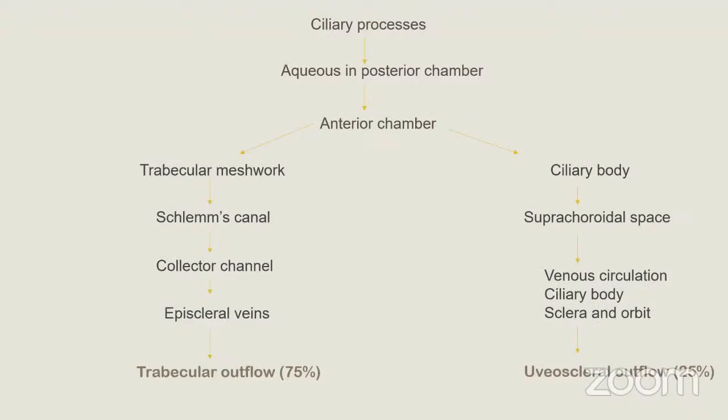Briefly reviewing the outflow pathway: aqueous produced by the ciliary processes goes into the posterior chamber and through the pupil enters the anterior chamber. Exit occurs via two major pathways — trabecular outflow and uveoscleral outflow. In trabecular outflow, aqueous goes from the anterior chamber into the trabecular meshwork, through Schlemm's canal, the collector channels, and the episcleral veins.